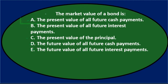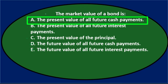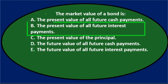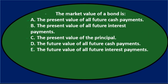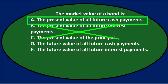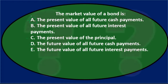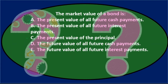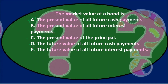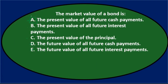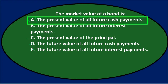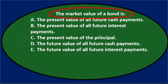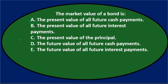Going back through the present value options: the market value of a bond is the present value of all future cash payments — that's option A. B is just the interest and C is just the principal. The answer is A because the value today equals what we'll receive — both interest payments and the principal at the end — discounted at the current market rate. That gives us the selling price of the bond.